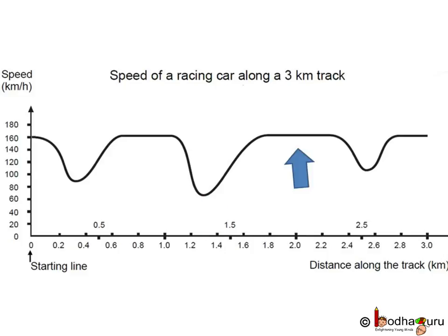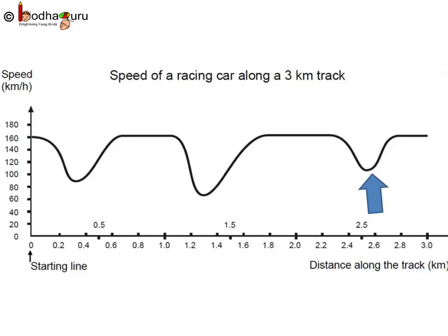Then again a straight track, because the car regained its top speed and maintained it for quite a while — so a longer straight track. Then again a turn, but this time the drop in speed is lesser compared to the previous time, meaning it's a wide turn, not very sharp. So we have three turns: the second turn is the sharpest, and the last turn before the end of the lap is the widest.